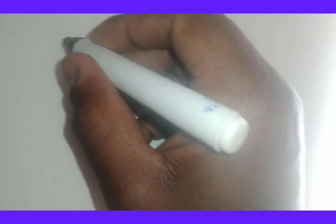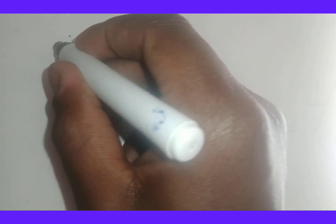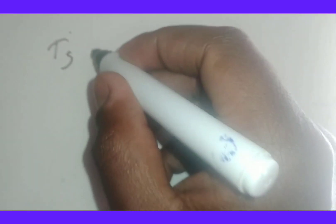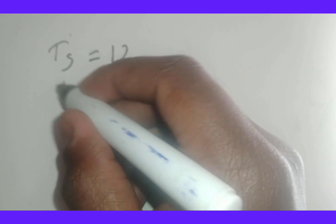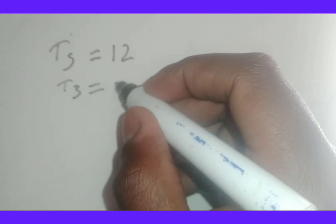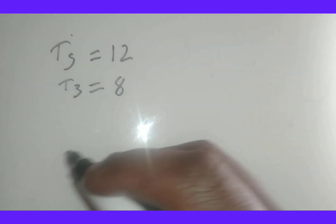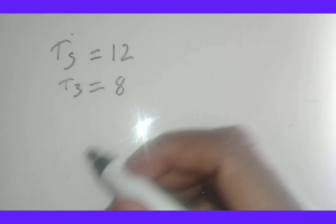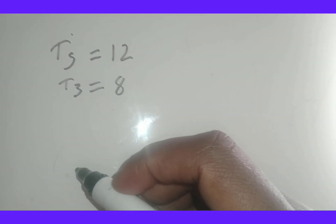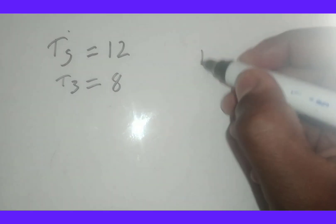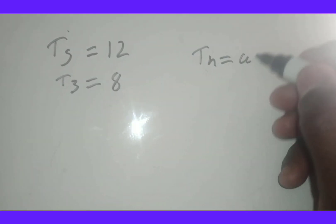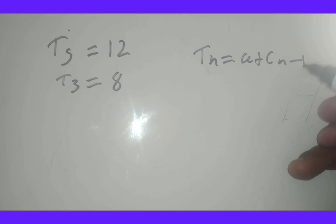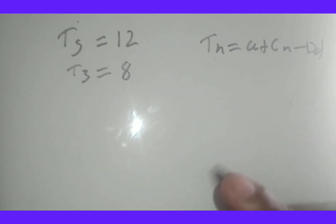Good day. Today I'm going to show you how to deal with simultaneous equations in patterns from all levels. Let's say it is given that the fifth term of an arithmetic sequence is 12 and the third term of an arithmetic sequence is 8. So they just told you that t3 equals 8 and t5 equals 12. The general term is tn equals a plus n minus 1 times d.